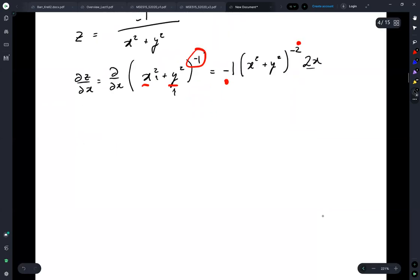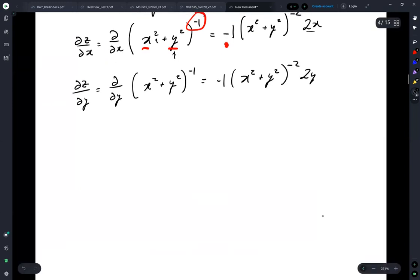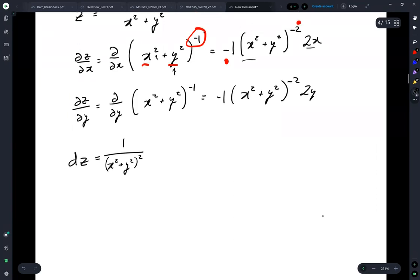Doing the same for y, dz by dy equals d by dy of x squared plus y squared to the minus 1, which equals minus 1 times x squared plus y squared to the minus 2 times 2y. And then our total dz is 1 over x squared plus y squared squared times 2x dx plus 2y dy.